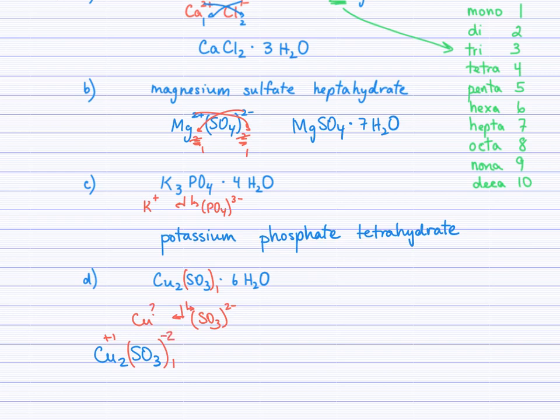And is sulfite correctly negative 2? Yes, it is. So if that's correct, then this is correct. And so we have copper(I) sulfite, and then the hydrate, there's 6H2O, so we'll have hexahydrate.